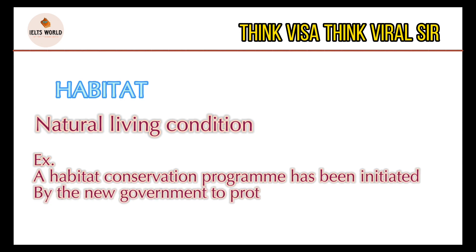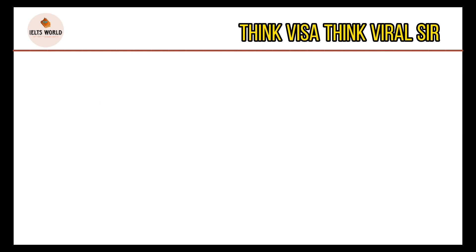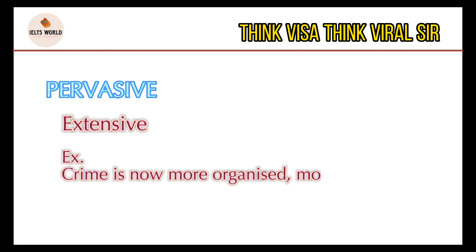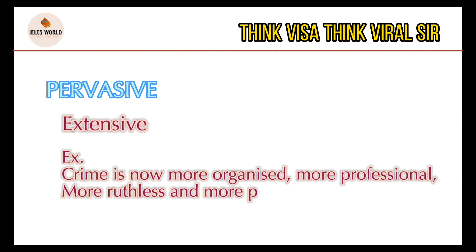Another important word is 'pervasive.' Pervasive is used in place of 'extensive' — the meaning of pervasive is extensive. For example: crime is now more organized, more professional, more ruthless, and more pervasive. That means the rate of crime is very, very high.